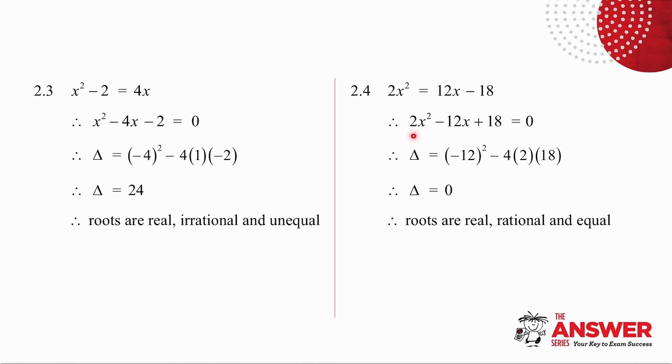In 2.4, again I write my equation in standard form and I get that delta equals 0. Remember if delta was greater than or equal to 0, the roots are real. 0 is a perfect square, so the roots are rational. And delta is equal to 0, which means my roots are equal.